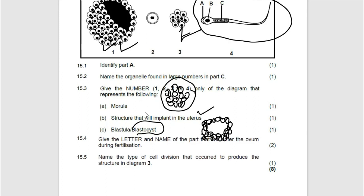Give the letter and the name of the part that will enter the ovum during fertilization. This is the second time they are asking the same question. So it is B and it is nucleus. Then they are saying name the type of cell division that will occur to produce the structure in 3.